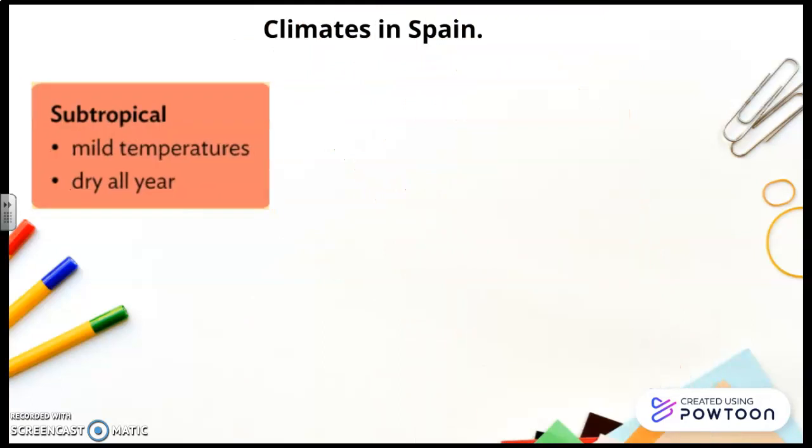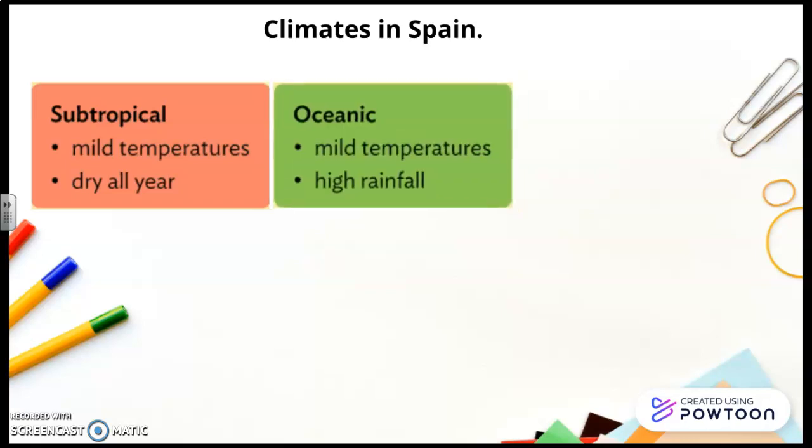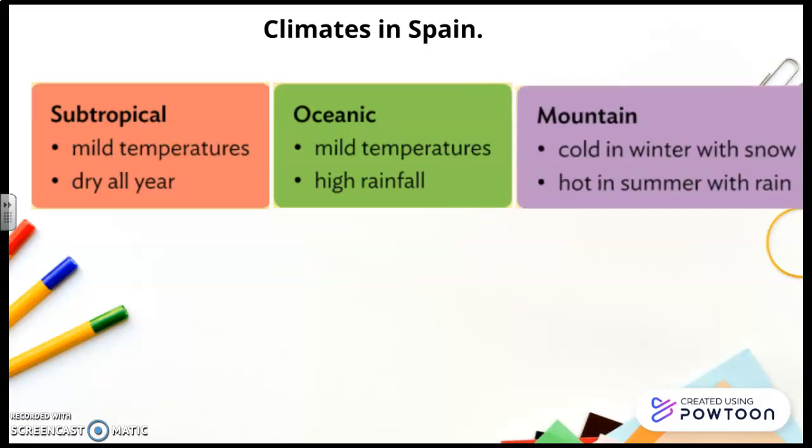Climates in Spain. Subtropical: mild temperatures, dry all year in the Canary Islands. Oceanic: mild temperatures and high rainfall in the north of Spain. Mountain: cold in winter with snow and hot in summer with rain in mountains.